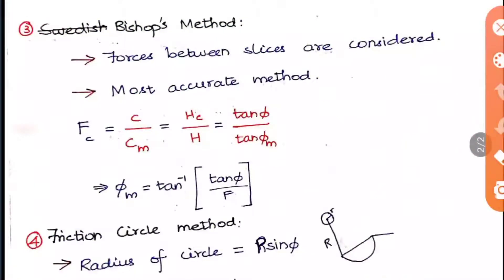The third method is Bishop's method, which is similar to the Swedish circle method (method of slices), but here the forces between slices are considered — unlike the Swedish circle method where they are neglected. Therefore, Bishop's method is the most accurate method for studying the stability of finite slopes.